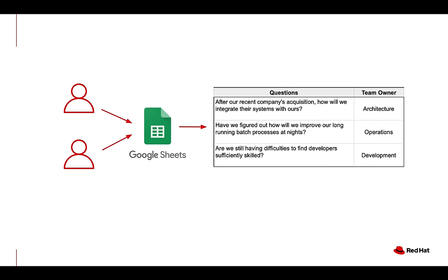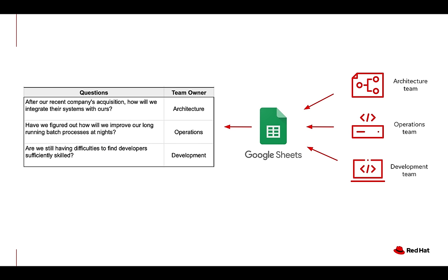Typically, this team would get together into a video call and then open a Google Sheets document. All those questions and concerns, they can type them in and assign the departments they believe can help them. So what we want from CamelK is to build a platform that is able to automatically collect all the feedback from other teams in the organization and make automatic updates on that Google Sheets.